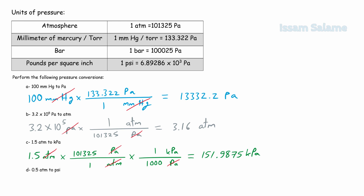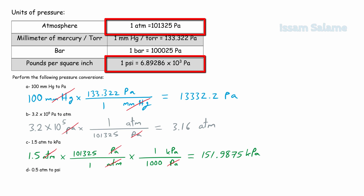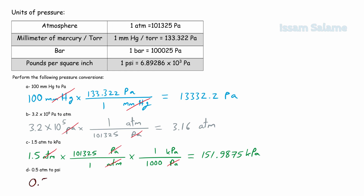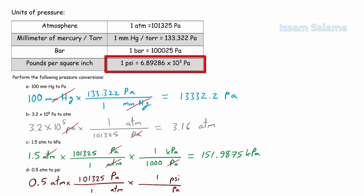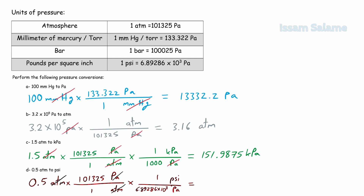Exercise D: convert 0.5 atmosphere to pounds per square inch (psi). Since there is no direct relation between atmosphere and psi, we use two conversion factors: atmosphere to Pascal, then Pascal to psi. Starting with 0.5 atm, multiply by (101,325 Pa / 1 atm), then multiply by (1 psi / 6.89286 × 10³ Pa). Cancelling units and computing, the answer is 7.35 psi.